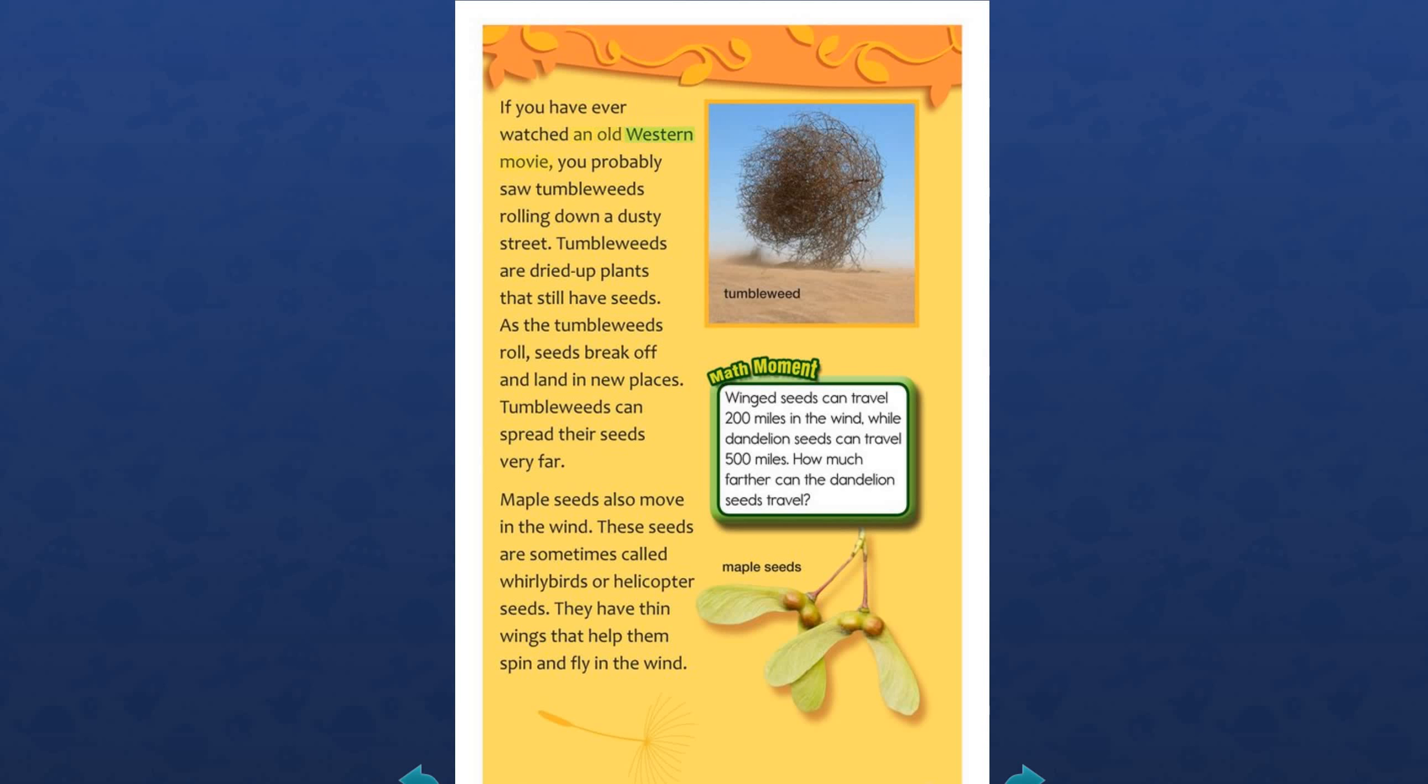If you have ever watched an old western movie, you probably saw tumbleweeds rolling down a dusty street. Tumbleweeds are dried up plants that still have seeds. As the tumbleweeds roll, seeds break off and land in new places. Tumbleweeds can spread their seeds very far. Maple seeds also move in the wind. These seeds are sometimes called whirlybirds or helicopter seeds. They have thin wings that help them spin and fly in the wind. Math moment: Winged seeds can travel 200 miles in the wind while dandelion seeds can travel 500 miles. How much farther can the dandelion seeds travel?